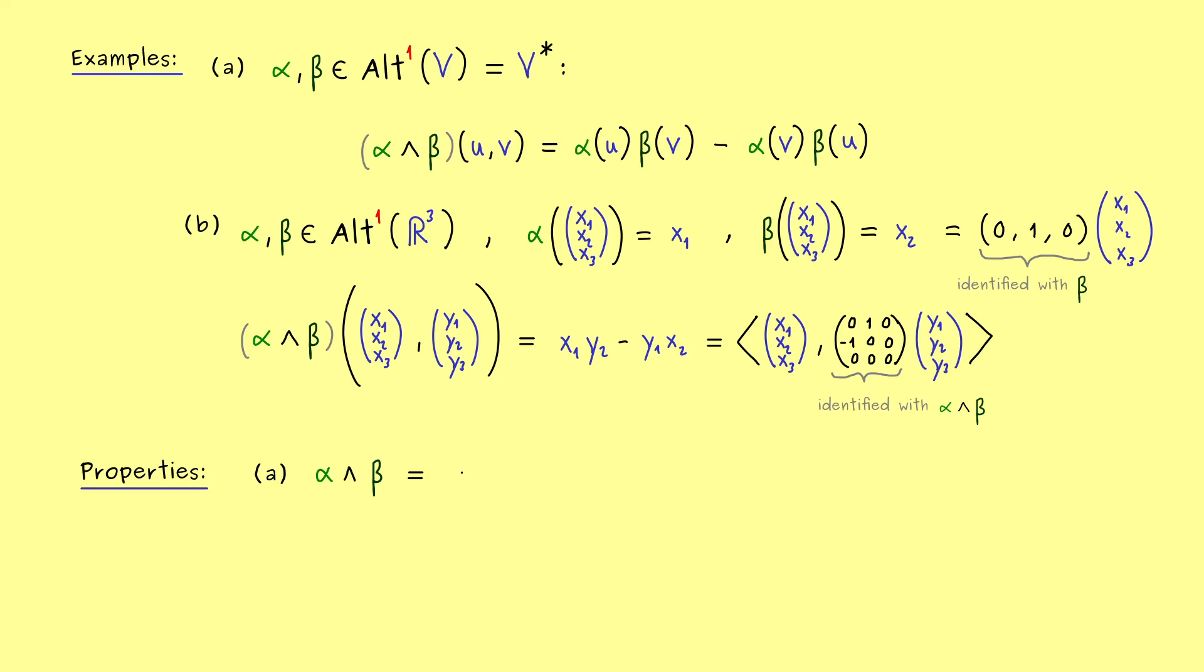Simply because, if you change the order, you get a minus sign, depending what is the order of alpha and beta. So you have (-1)^(k*s), and then we simply have the other order. So please remember this factor here. Some people just say this is the anti-commutative rule of the wedge product.